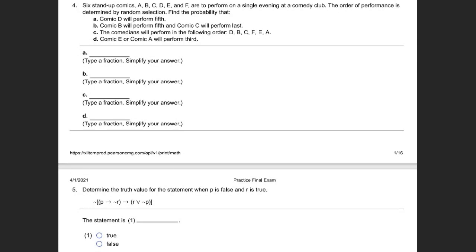We're reviewing Problem Number 4: six stand-up comics — A, B, C, D, E, and F — are to be performed on a single evening at a comedy club. The order of performance is determined by random selection. Find the probability for each part.